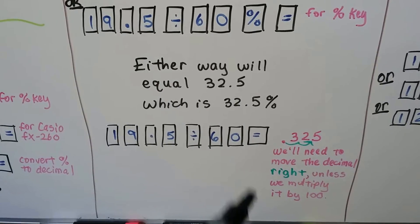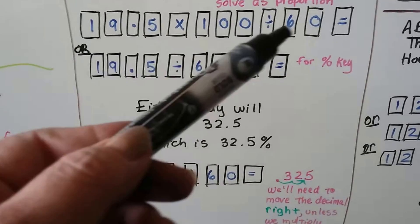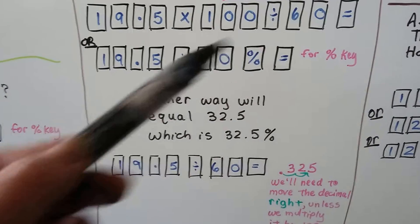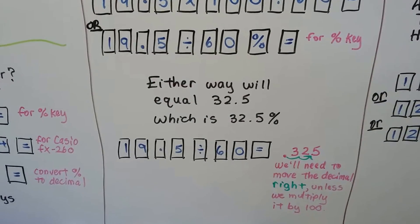If you do it as 19.5 divided by 60 equals, you're going to get a .325 and in order for it to be a percent, we're going to have to move the decimal point to the right two hops and then put the percentage sign on it to get 32.5 percent. You could also multiply it by 100 and it would come out that way because that's basically what we did here.